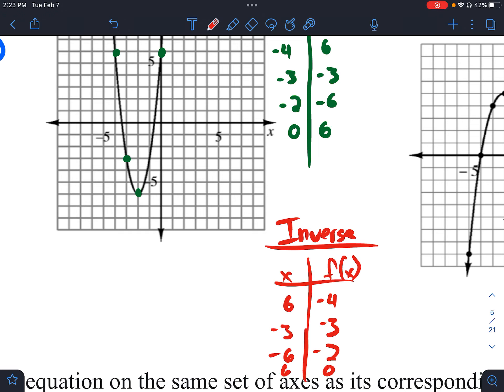So when we graph this one, 6, negative 4, negative 3, negative 3, negative 6, negative 2, and 6, 0. And we have our parabola that looks like this. Again, this is our inverse function.